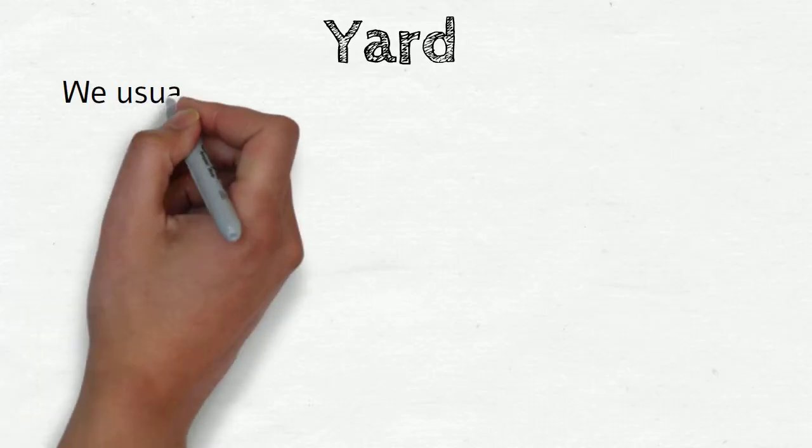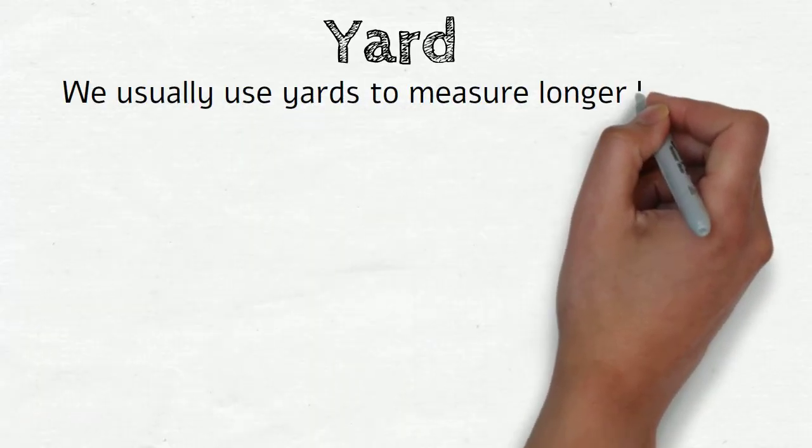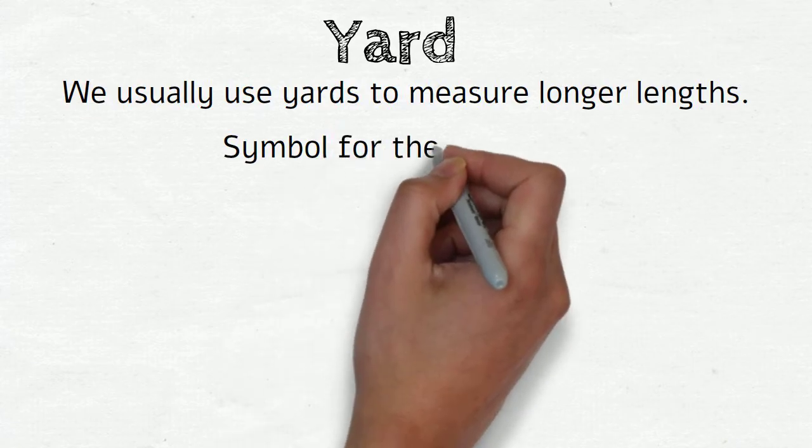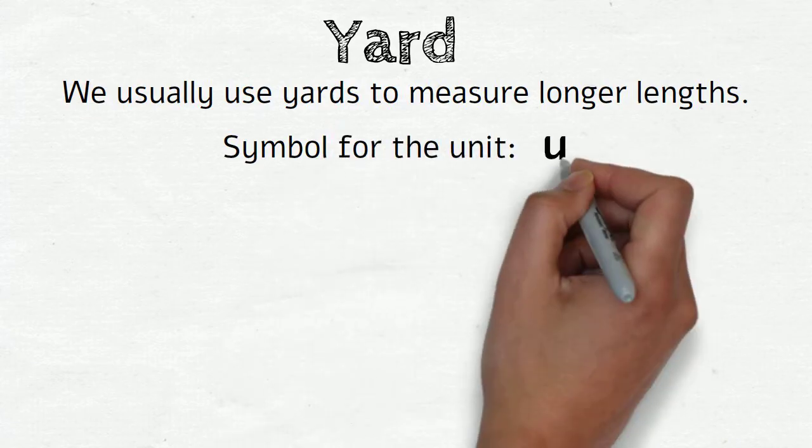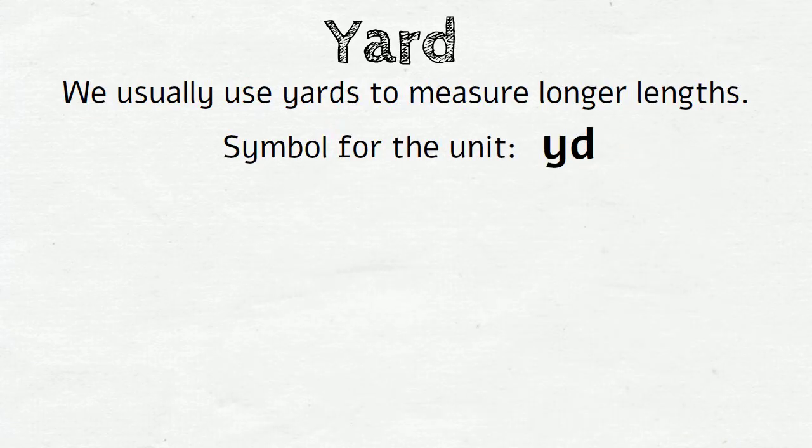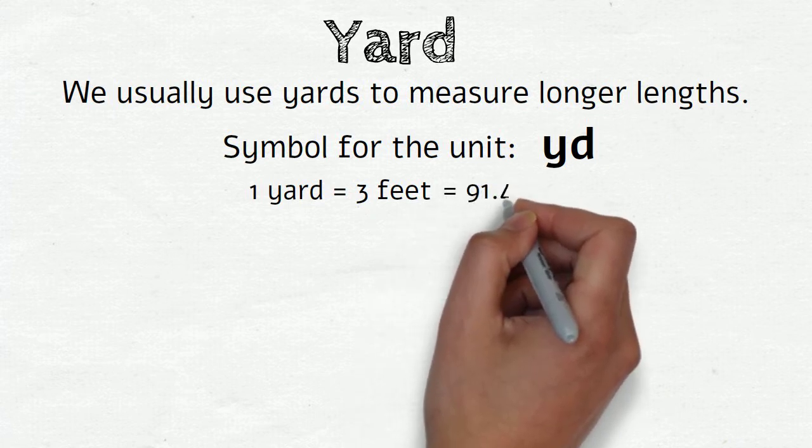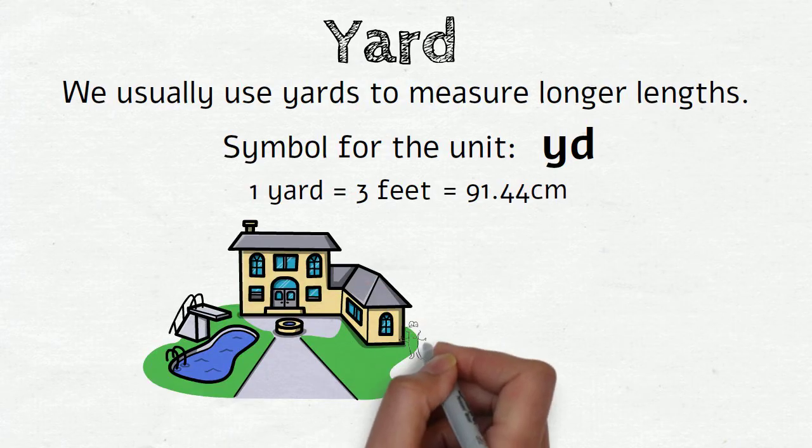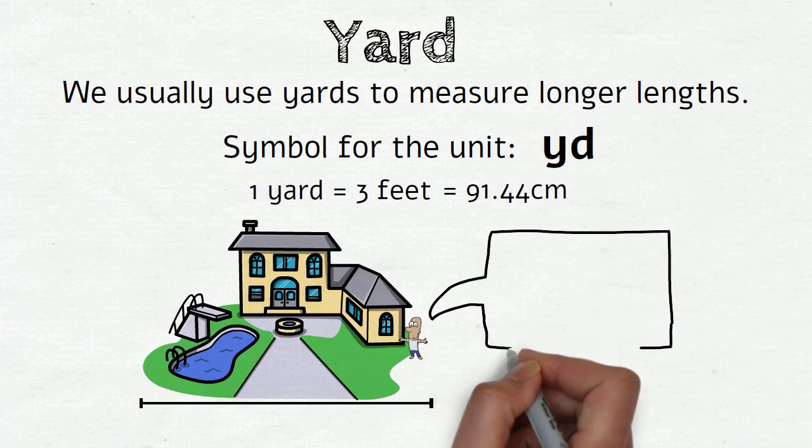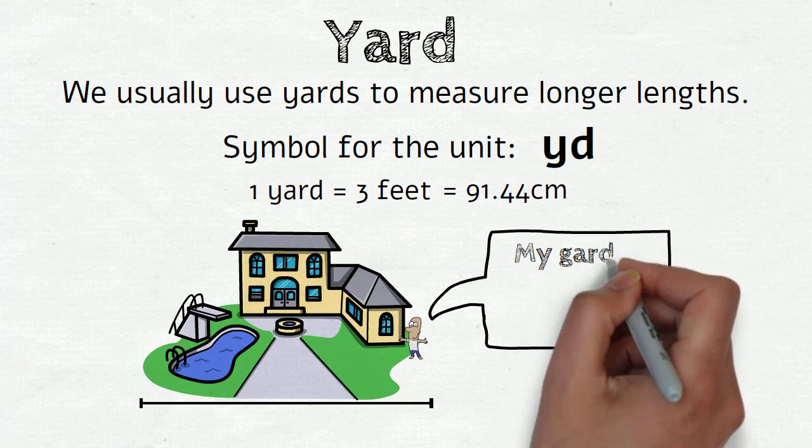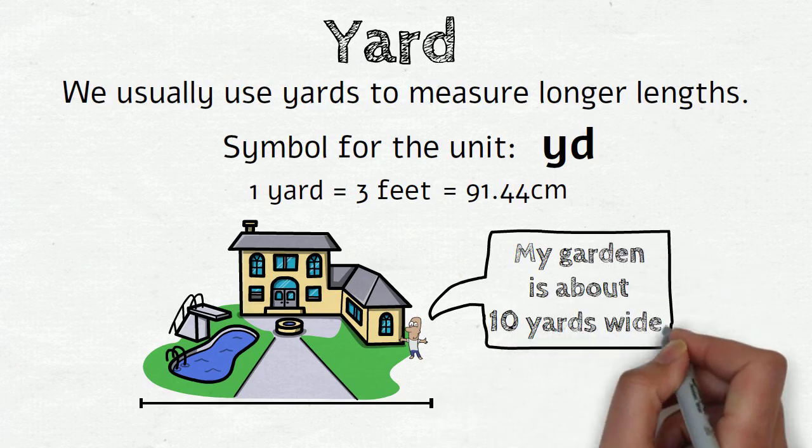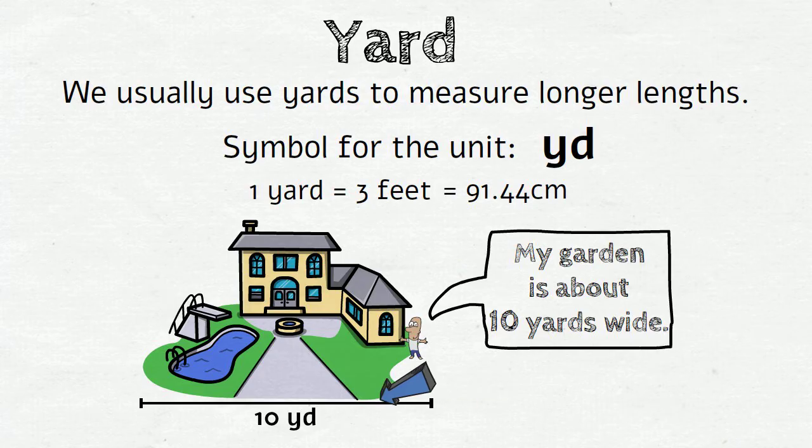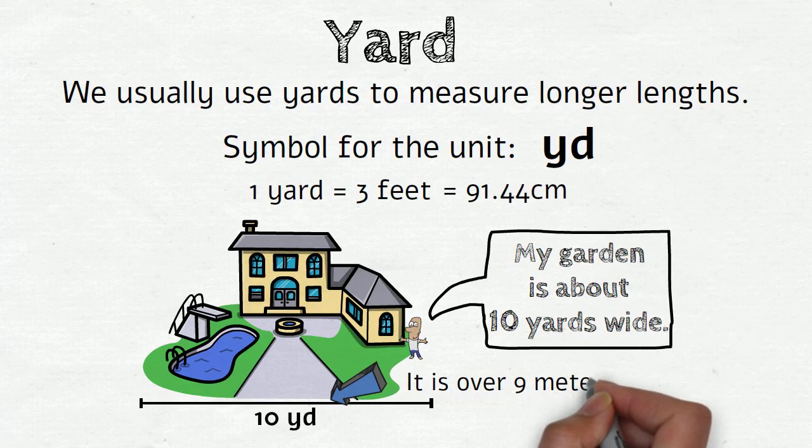We usually use yards to measure longer lengths. The symbol for this unit is yd. And 1 yard equals 3 feet. It also equals 91.44 centimeters in a metric system. So if someone says 'My garden is about 10 yards wide,' it means that it is over 9 meters wide.